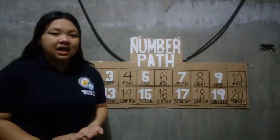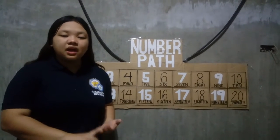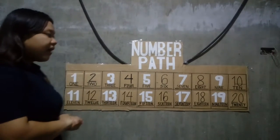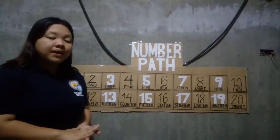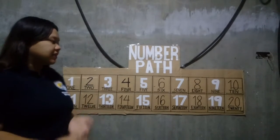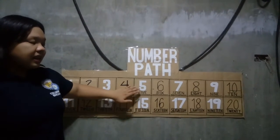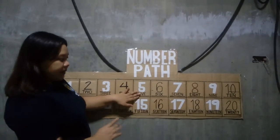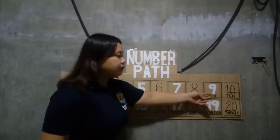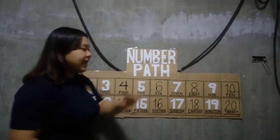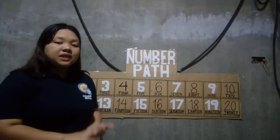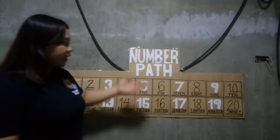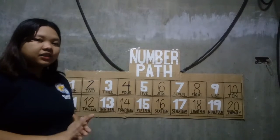Now let's discuss how to count, add, and also subtract numbers using the numbered path. Let's add 5 plus 4. So from 5, let's count forward 4 times to get the answer: 1, 2, 3, 4 — and we end up at 9. So the answer to 5 plus 4 is equal to 9, which is correct and accurate using the numbered path.